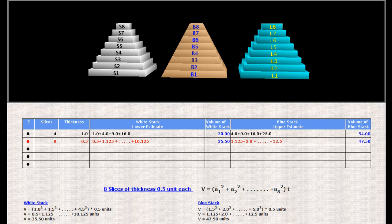Proceeding in a similar fashion as earlier, the volume of the 8 slices of the pyramid can be seen to lie between the sum of the volumes of the 8 slices of the white stack, which is 35.5 cubic units, and the volume of the 8 slices of the blue stack, which is 47.5 cubic units. These calculations are summarized in the second row of the table and shown in detail at the bottom of the screen.